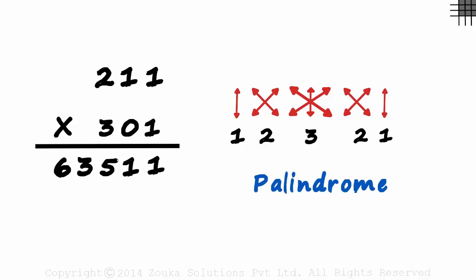It's a sequence of characters which reads the same backward or forward. One, two, three, two, one. One, two, three, two, one. Madam is another example of a palindrome. M-A-D-A-M and M-A-D-A-M.